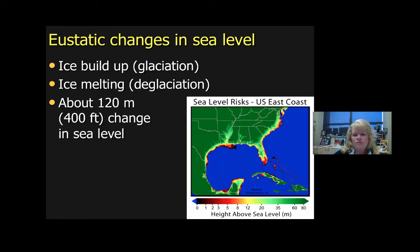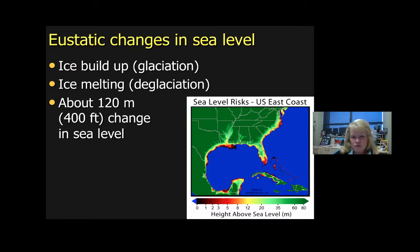Eustatic sea level changes are very closely associated with climate change. When looking at ice buildup, we're talking about massive continental ice packs and sea ice. In the last ice age, sea level dropped between 300 and 400 feet — that's incredible.